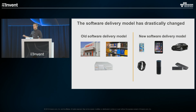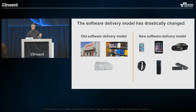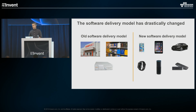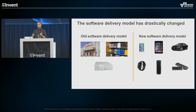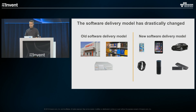A big part of it is the delivery model. Once upon a time you would have had to drive to a store, search shelves for a box of software, go to checkout, bring it home, pop it into your CD or floppy disk drive. Today all of the devices I'm showing here are part of an app-driven ecosystem. Tesla is a great example — about a year ago, drivers woke up and their cars could drive themselves. That's an incredible change in getting software out to consumers in a way that wasn't possible years back.